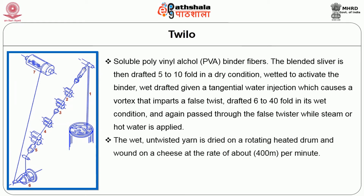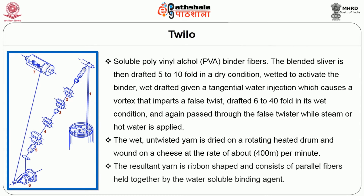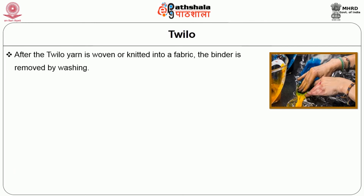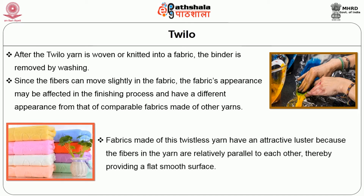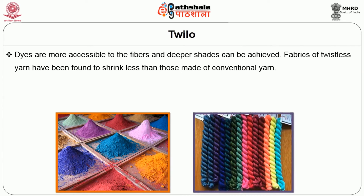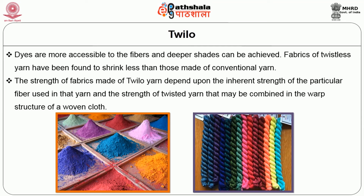The wet untwisted yarn is dried on a rotating heated drum and wound on cheese at a rate of about 400 meters per minute. The resultant yarn is ribbon-shaped and consists of parallel fibers held together by a water-soluble binding agent. After the Twillow yarn is woven or knitted into a fabric, the binder is removed by washing. Since the fibers can move slightly in the fabric, the fabric's appearance may be affected in the finishing process. Fabrics made of this twistless yarn have an attractive luster because the fibers in the yarn are relatively parallel to each other, providing a flat smooth surface. Dyes are more accessible to the fibers and deeper shades can be achieved. Fabrics of twistless yarn have been found to shrink less than those of conventional yarns.